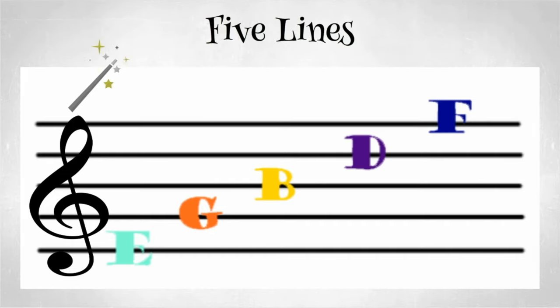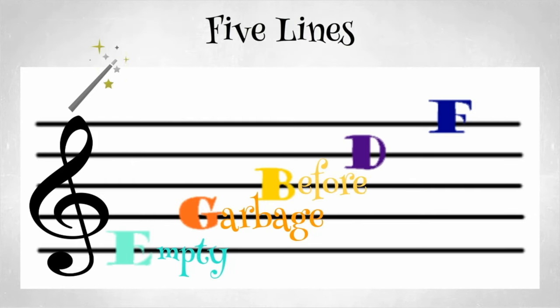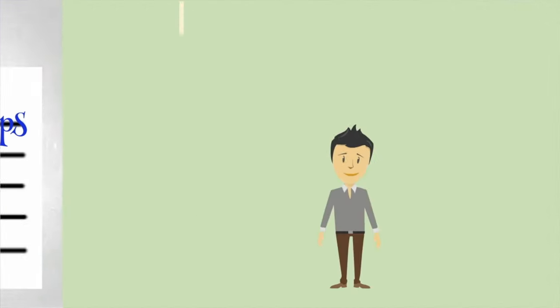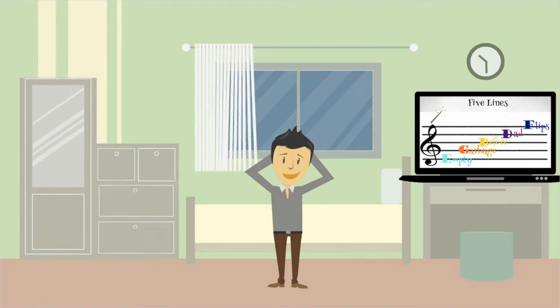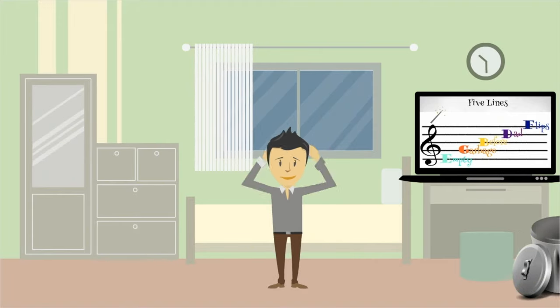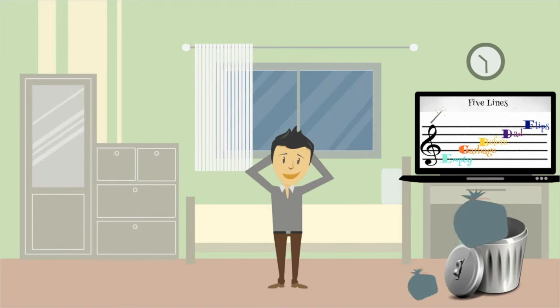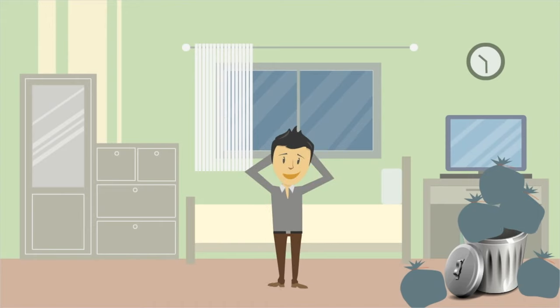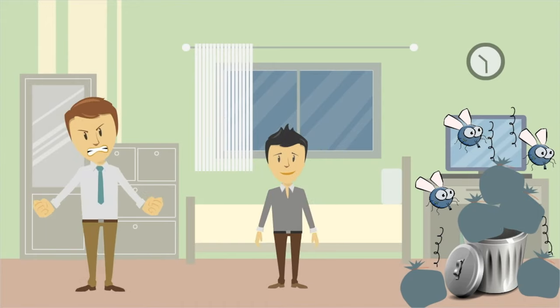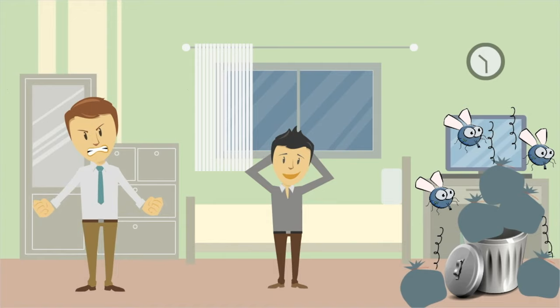Memorizing the order of these notes can be hard, but there's an easy way to help us remember the letters of the treble clef lines. We can assign a word to each letter, like empty garbage before dad flips. Yeah, that's right. Empty garbage before dad flips. Oh boy, that looks like a bunch of trash. You better empty the garbage before dad flips. Nice.